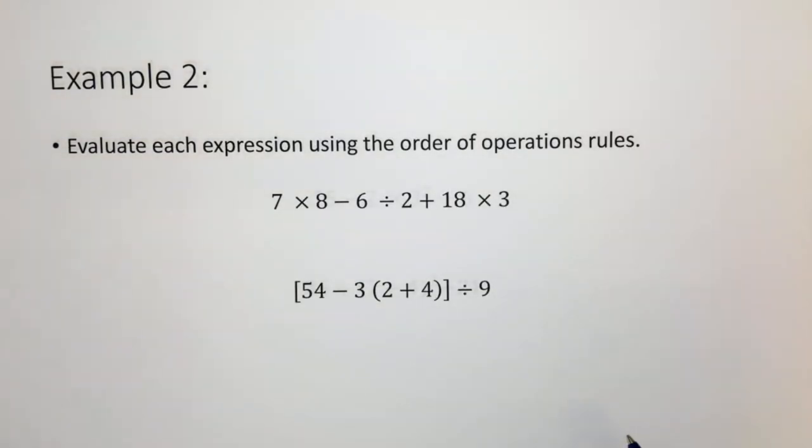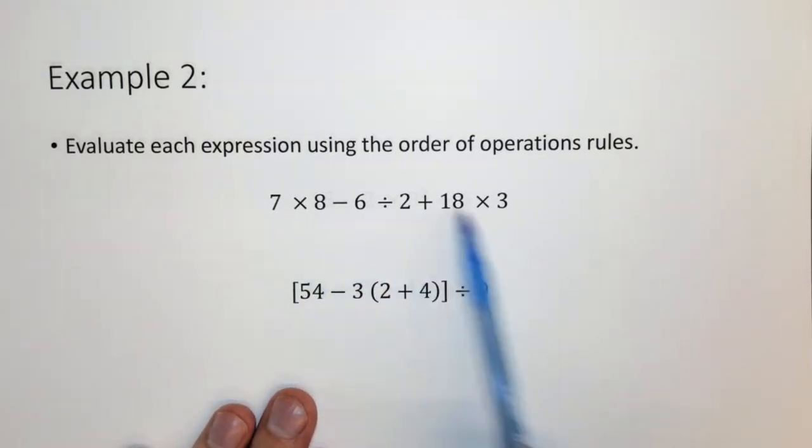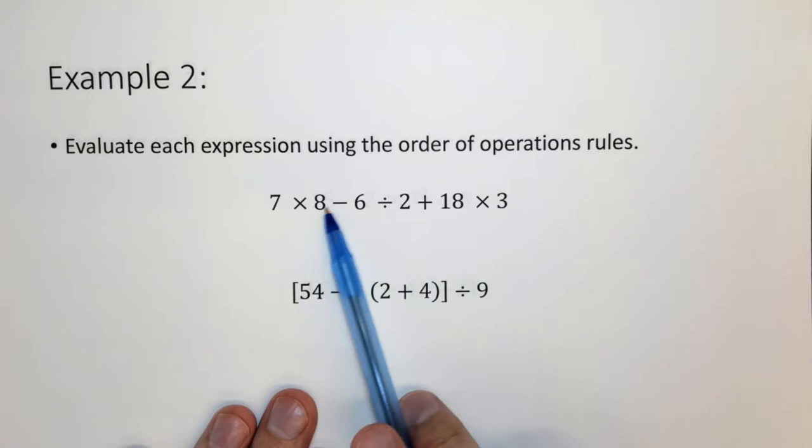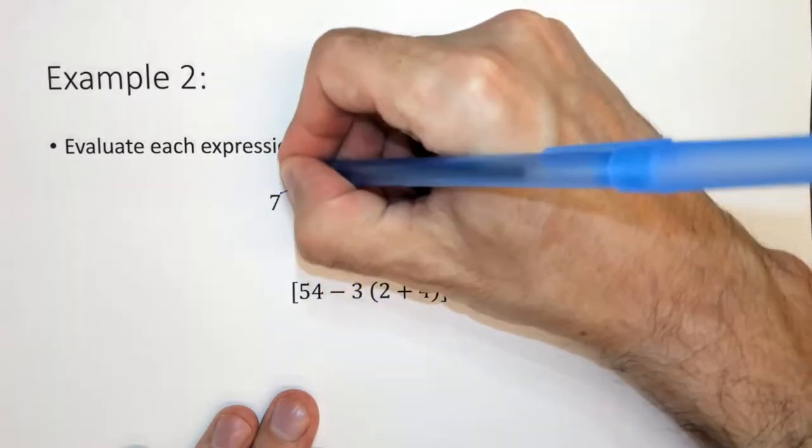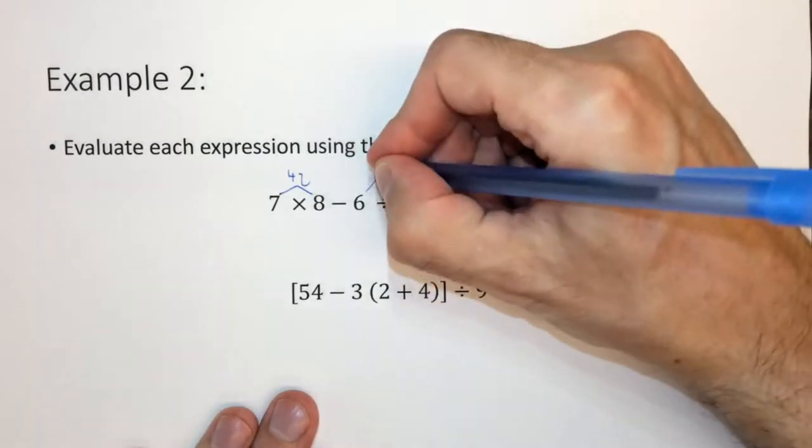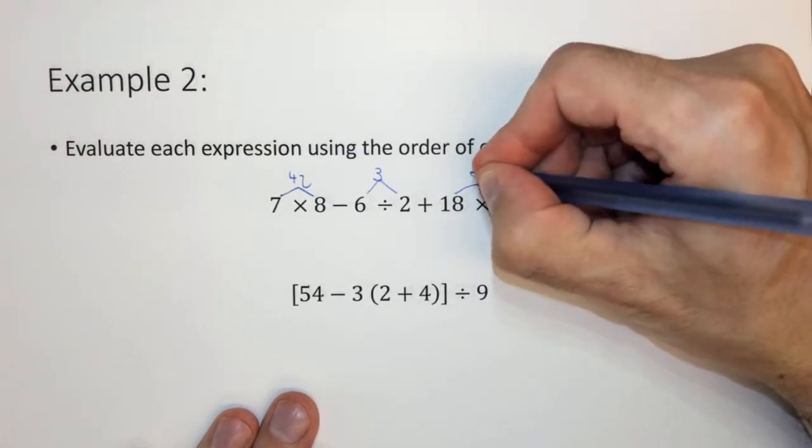Let's look at another example. In this question, we have lots of stuff going on. We have 7 times 8 minus 6 divided by 2 plus 18 times 3. We want to do all these multiplications and divisions first, then the adding and subtracting. So 7 times 8 is 42. 6 divided by 2 is 3, and 18 times 3 is 54.